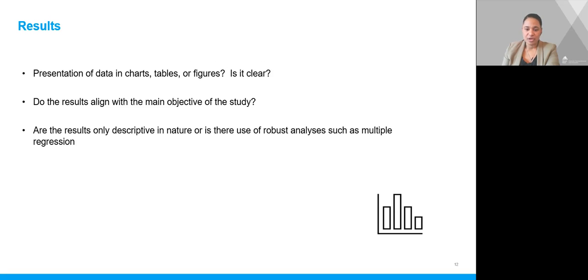Are the authors describing their population characteristics? Have they provided any comparisons across groups? Have the authors completed robust analyses, such as multiple regression? These are all examples of things to look for in the results section.